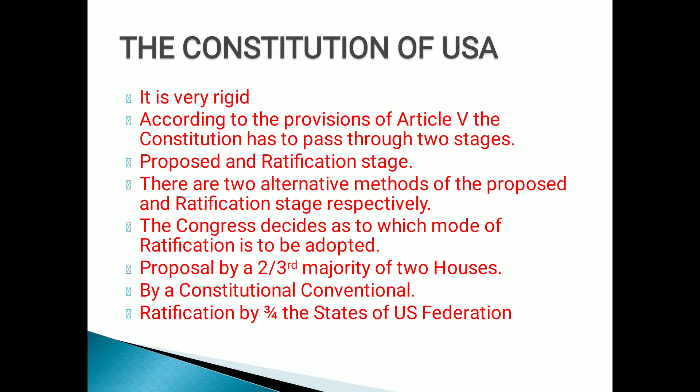The states or legislatures too can demand changes in the constitution, which in either case shall be valid to all intents and purposes as part of this constitution, when ratified by the legislatures of three-fourths of the several states or by conventions in three-fourths thereof, as the one or the other mode of ratification may be proposed by the Congress. When we analyze the provision of Article 5, we find that amendment proposals in the US constitution have to pass through two stages: a proposal stage and a ratification stage. There are two alternative methods of making a proposal and two alternative methods of ratification.